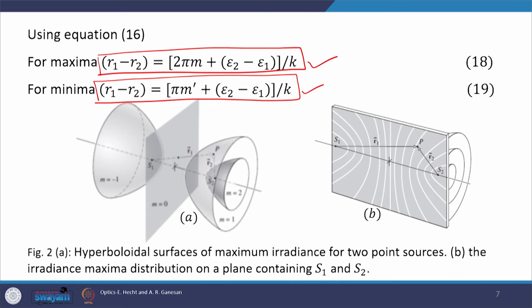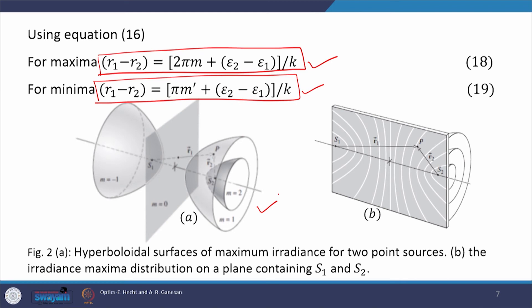Plotting equations 18 and 19 gives hyperboloids of revolution, shown in figure 2A. For different values of m we get different hyperboloids. S1 and S2 act as the two foci of the hyperboloids. The right-hand sides of equations 18 and 19 represent the difference between the vertices of the hyperboloid of revolution.